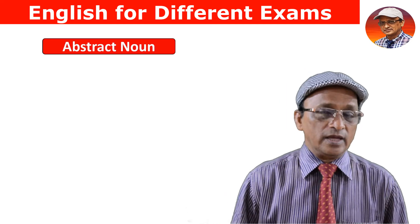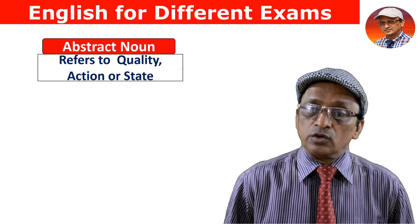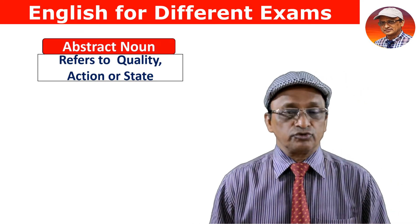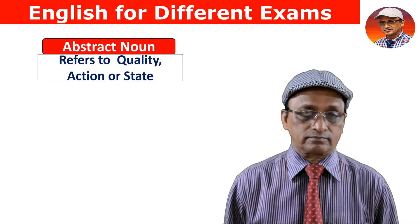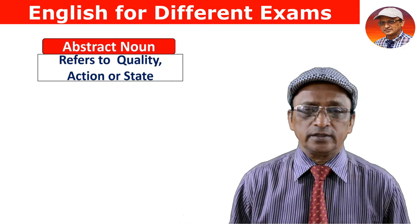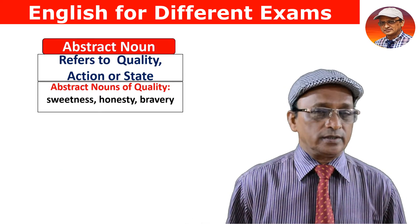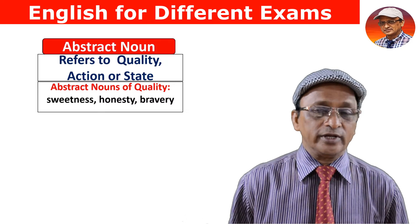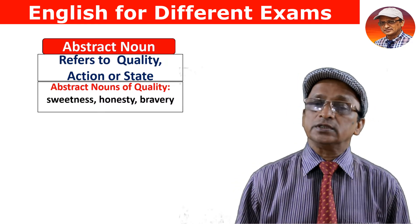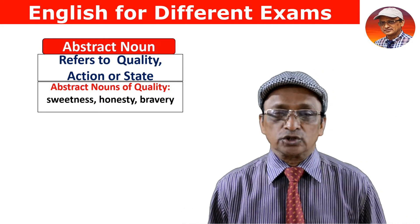The last category is abstract noun. Abstract noun refers to quality, action, and the state or different stages of time. When talking of quality: sweetness, honesty, bravery — these are all abstract nouns referring to qualities.